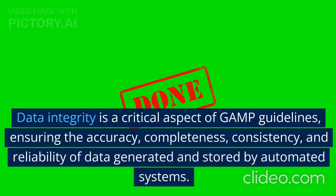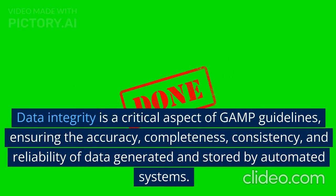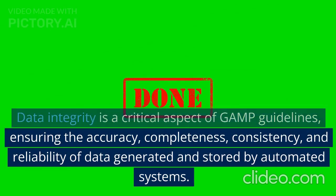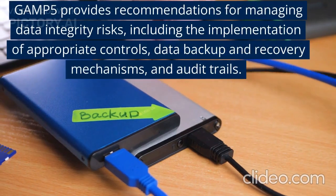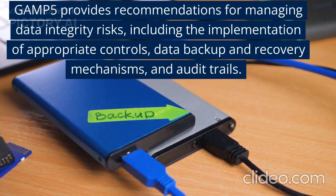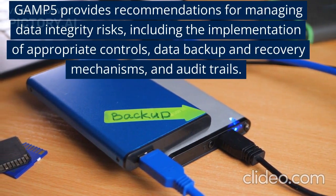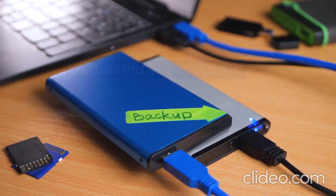Data Integrity: Data integrity is a critical aspect of GAMP guidelines, ensuring the accuracy, completeness, consistency, and reliability of data generated and stored by automated systems. GAMP5 provides recommendations for managing data integrity risks, including the implementation of appropriate controls, data backup and recovery mechanisms, and audit trails.